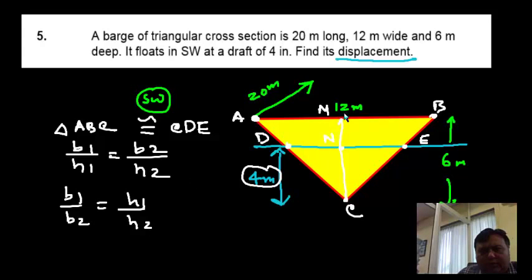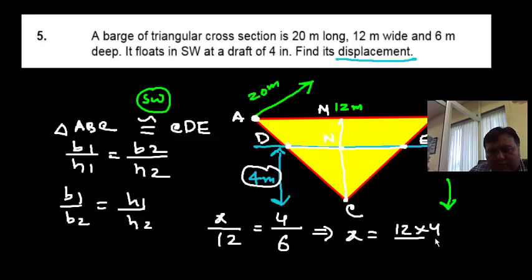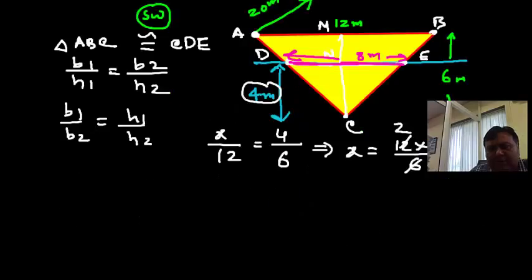We can say this DE, which is x, divided by 12 which is AB, is equal to this which is 4 divided by 6. So I get x is equal to 12 into 4 divided by 6, this gives me 2 multiplied by 4, this is 8 meter. So I can say this distance DE is 8 meter.